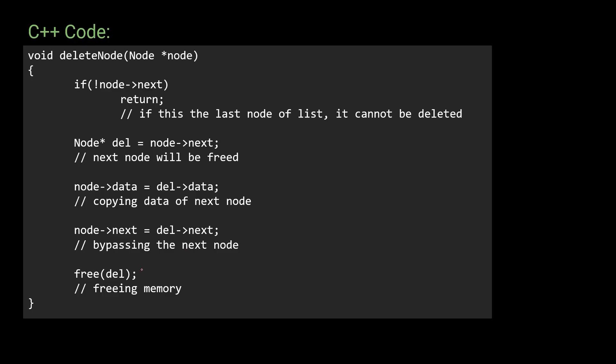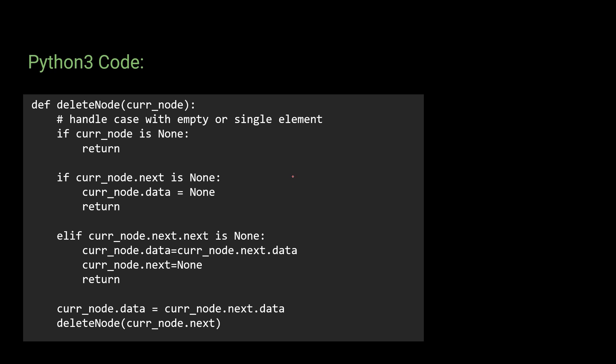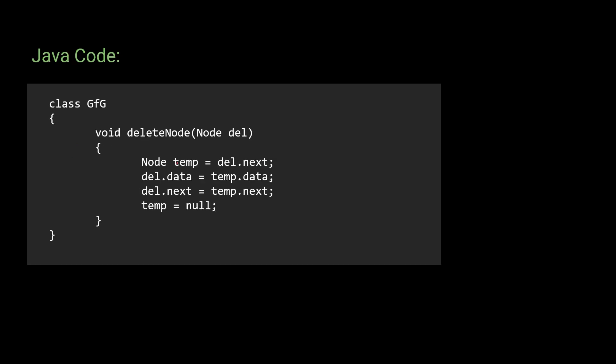Also, in C++ you can use the 'delete' function instead of 'free' to delete the temporary node. This is the C++ code. Here is the Python 3 code for the same second approach, and here is the Java code for the same approach. Now let's move forward to the first approach using pointers.